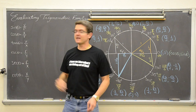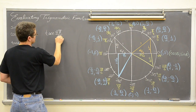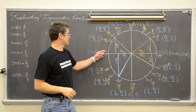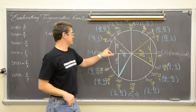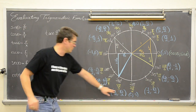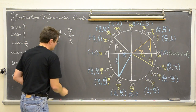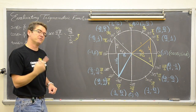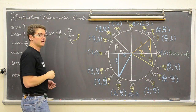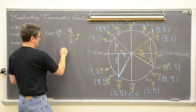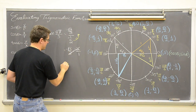Let's take a look at tangent. Tangent of theta is y over x. Let's find the tangent of 4pi over 3. Anything with a divisor of 3 is a multiple of 60 degrees — so 4 times 60 puts us at 240 degrees in quadrant 3. Tangent is y over x, which is negative square root of 3 over 2 divided by negative one half. When you have a fraction over a fraction the bottom one flips up — you multiply by the reciprocal. So negative square root of 3 over 2 times negative 2 over 1: the 2's cancel, the negatives cancel, and you get a final answer of square root of 3.